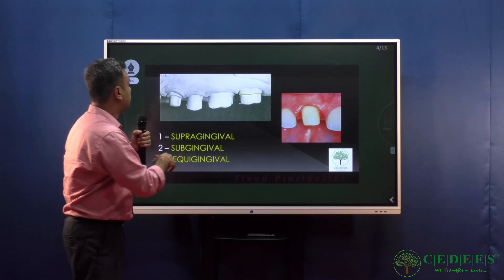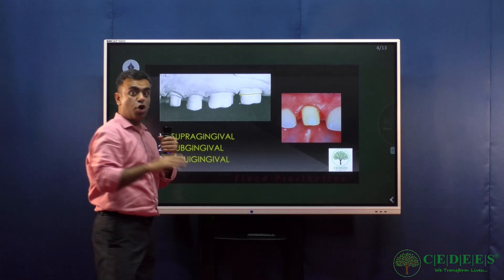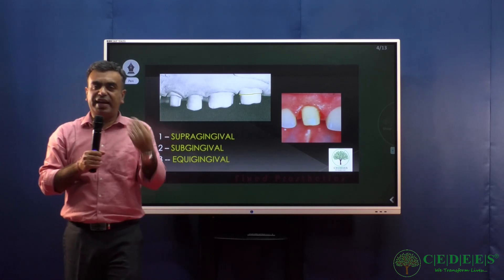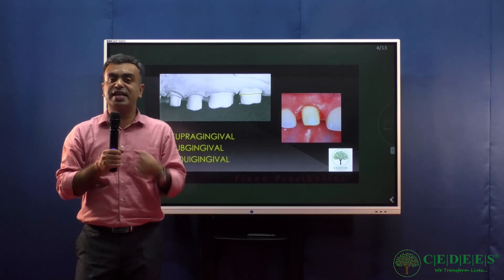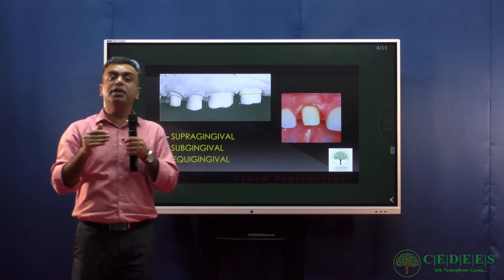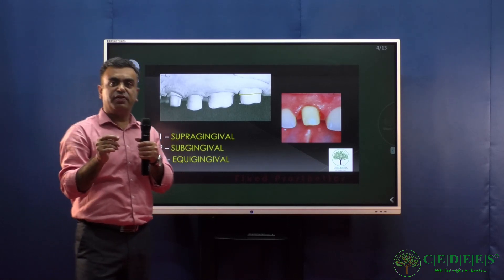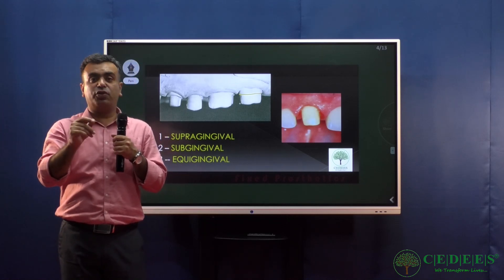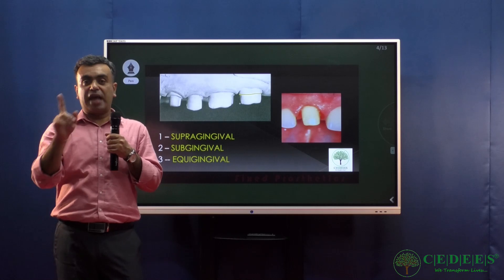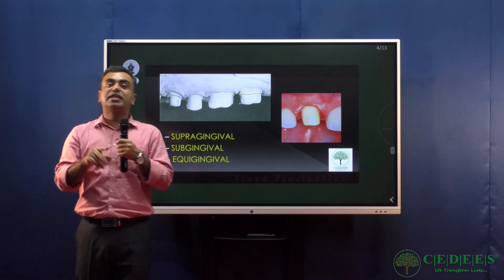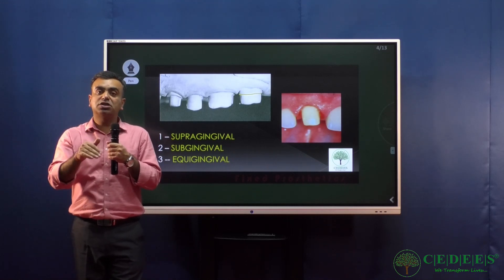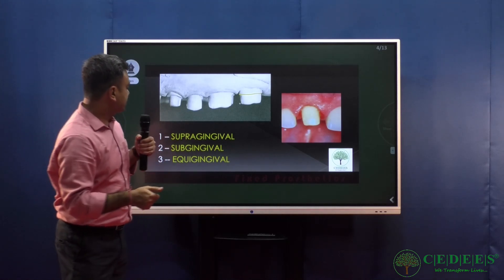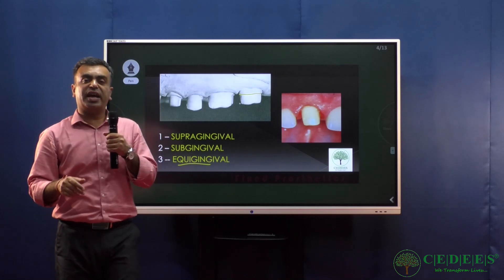The sub-gingival finish line is below the gingival crest and not visible to the naked eye. It is indicated when there is cervical caries or when a high-risk aesthetic restoration requires the finish line to be hidden. However, the patient cannot see the margins and therefore cannot maintain them, leading to a high risk of leakage under the crown.